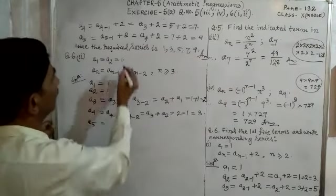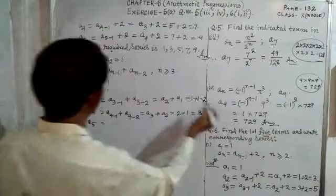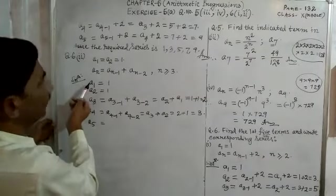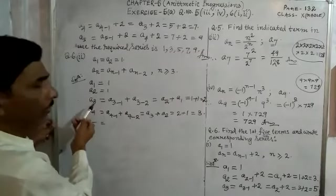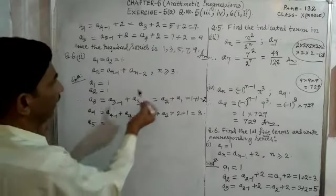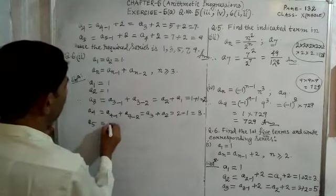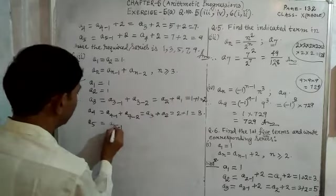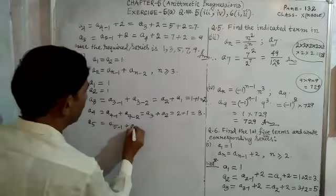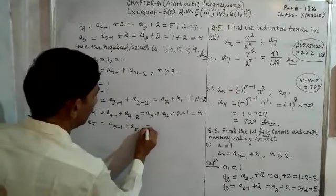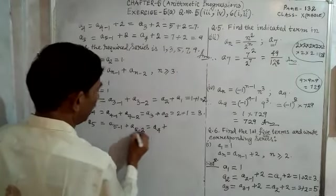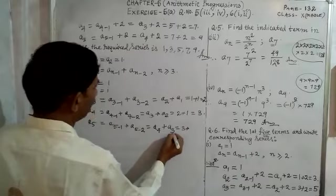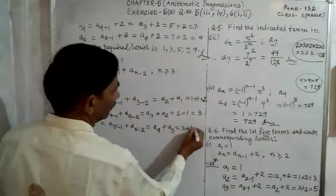When n = 5: a₅ = a₍₅₋₁₎ + a₍₅₋₂₎ = a₄ + a₃. The value of a₄ is 3 and the value of a₃ is 2. So a₅ = 3 + 2 = 5. The first 5 terms are: 1, 1, 2, 3, 5.